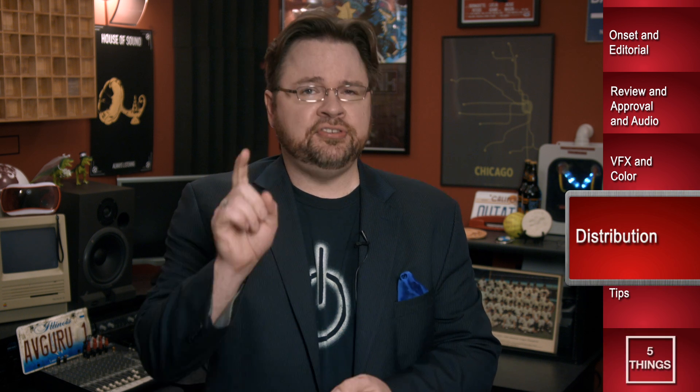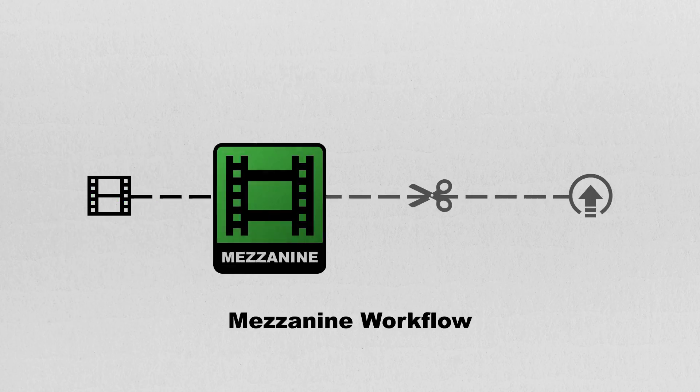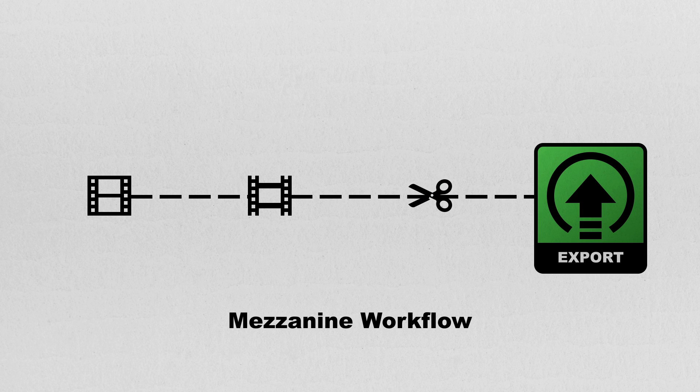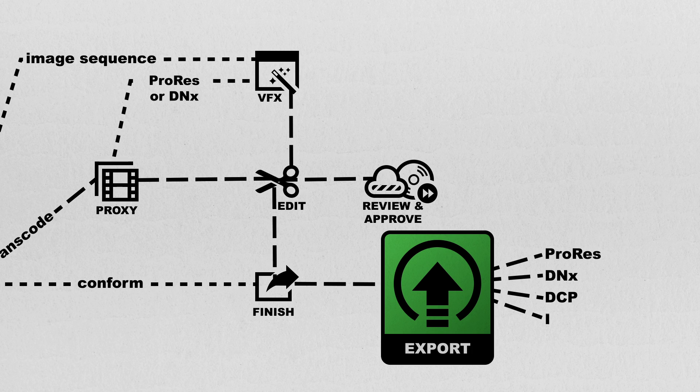Distribution is a very tricky thing. New platforms are emerging and current distribution outlets are evolving their specs, so you can't guess at what they want. You need to request their deliverables document — and I assure you they have one. Wherever you're going, they have a deliverables document, so ask for it. For your final export, high-bitrate ProRes and DNxHD are common formats. This becomes your master mezzanine file — one high-res file from which to generate all subsequent deliverable files, with no need to go back into the NLE unless you need a picture change. Generating a DCP for a theater or an IMF package for Netflix will require some non-common tools and someone who knows how to drive them.